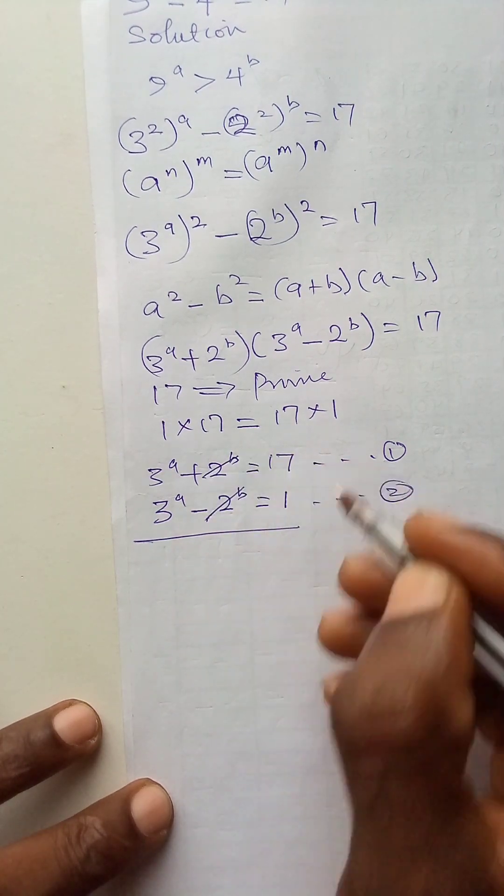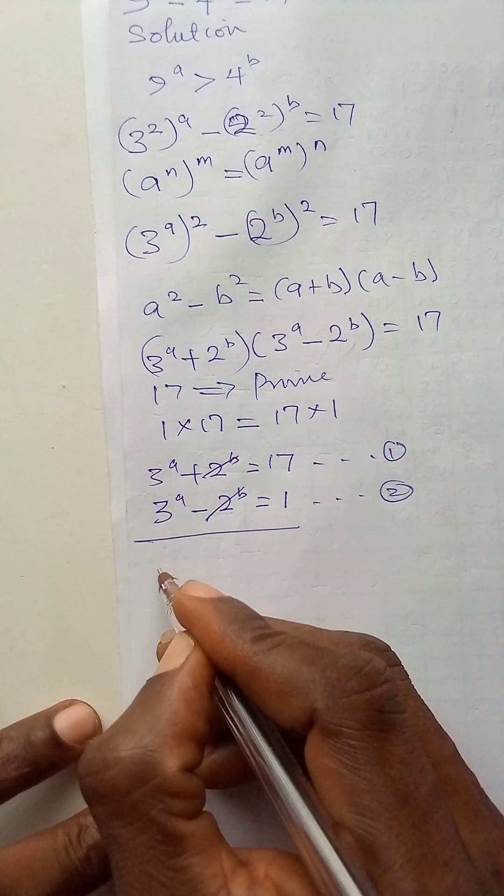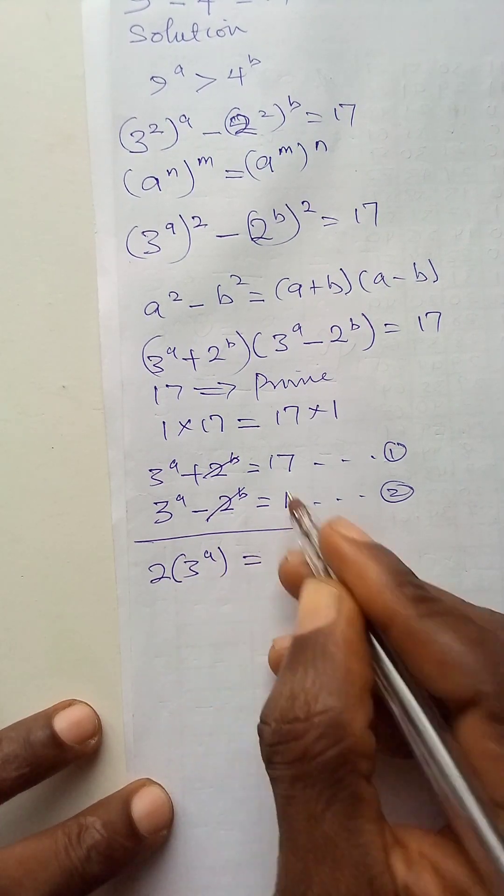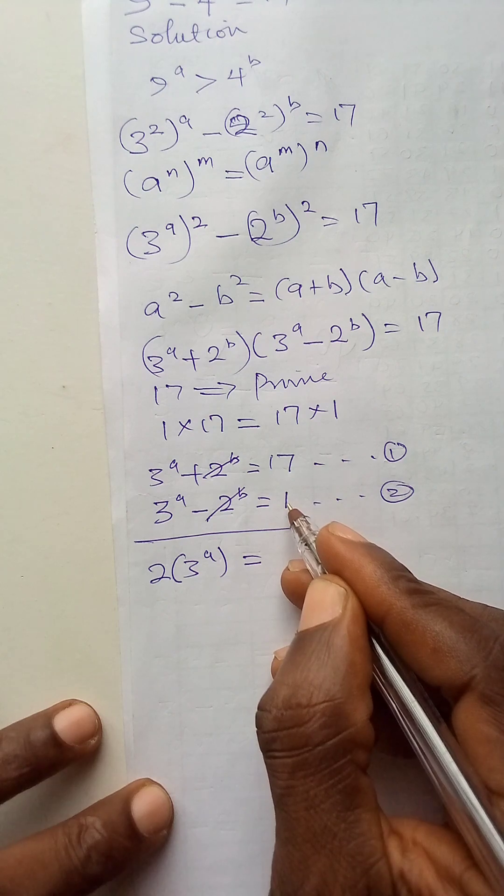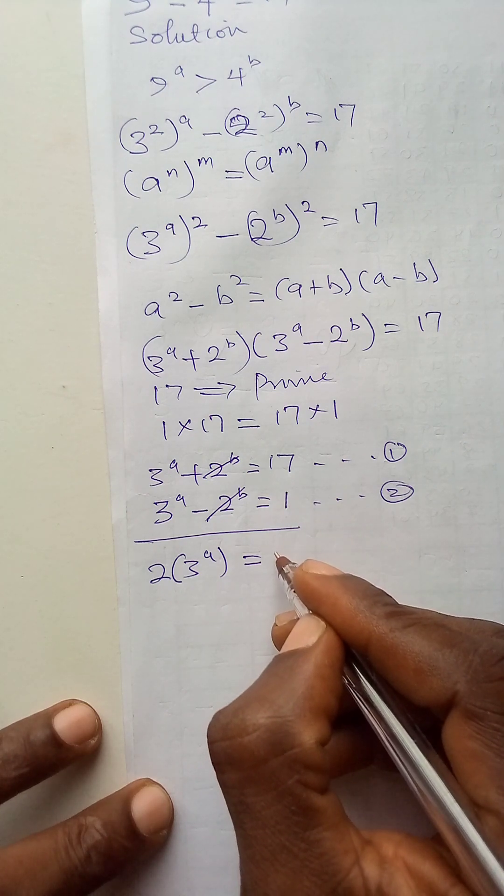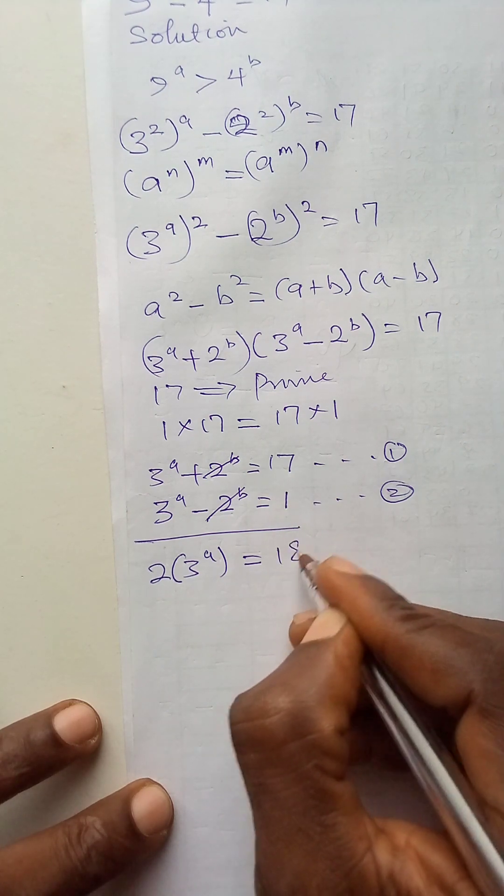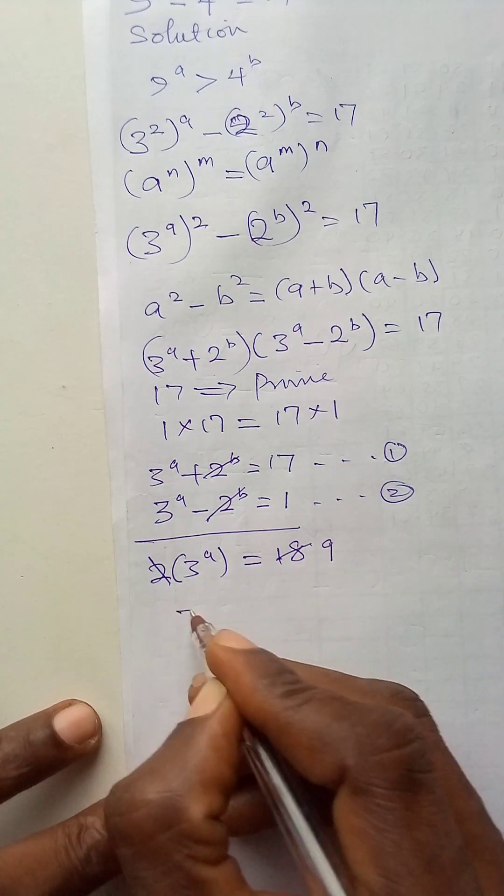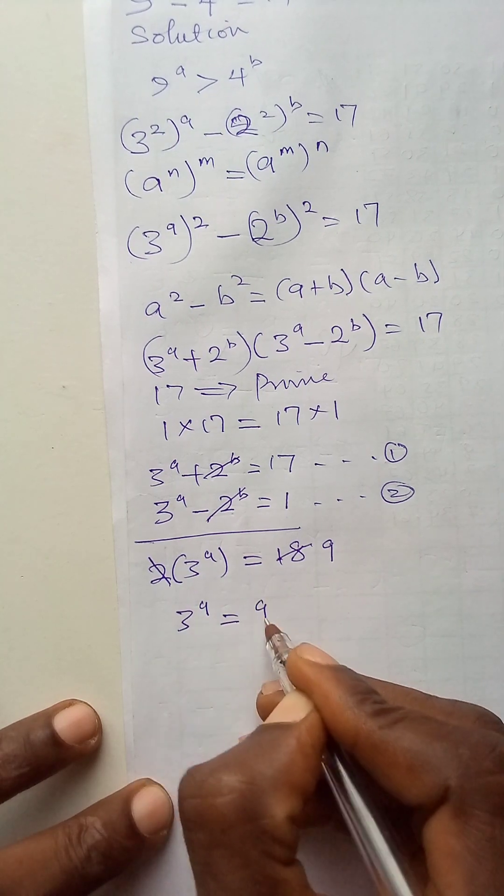To solve 1 and 2 simultaneously, this will cut this, remaining this. That is 2 bracket 3a is equal to 17 plus 1. 17 plus 1 is 18. Now, this 2 will divide this 18 here, remaining 9. So, 3 to power a is equal to 9.